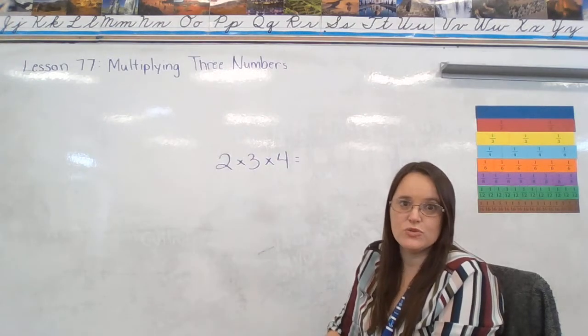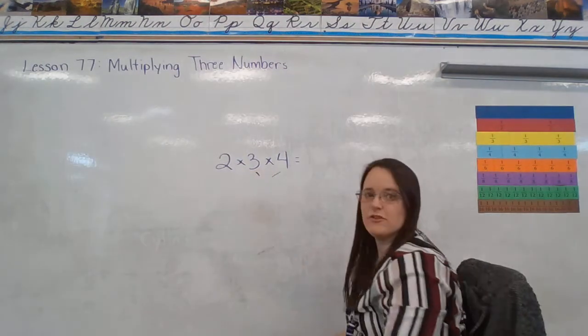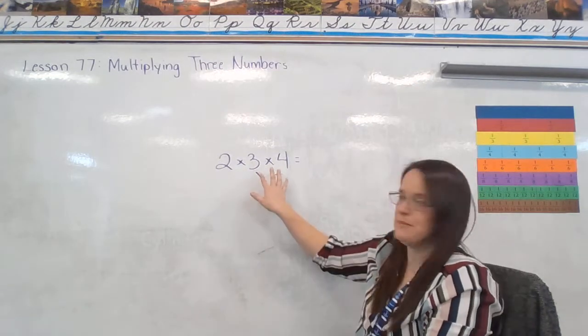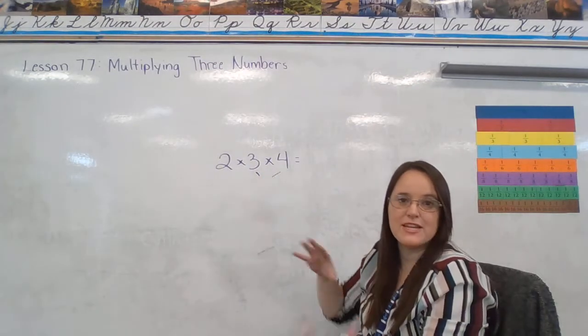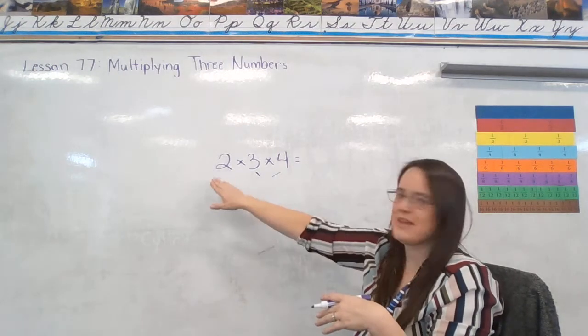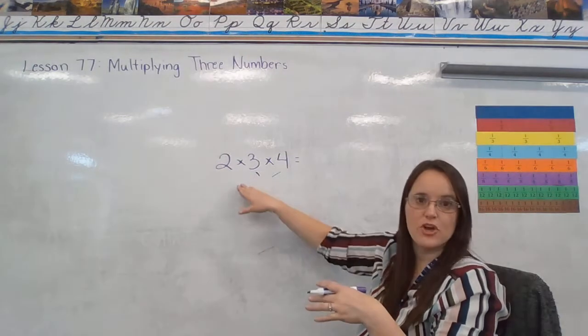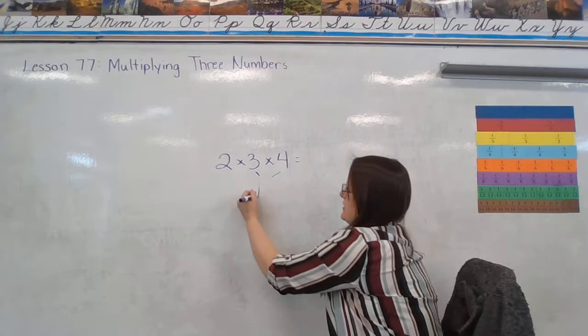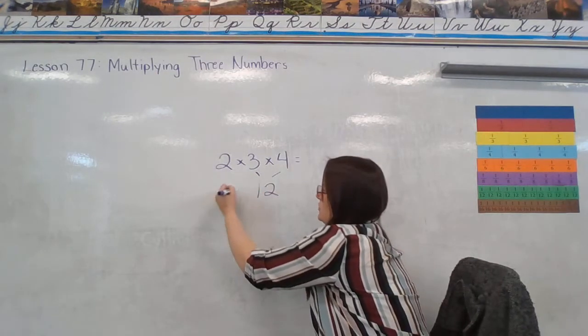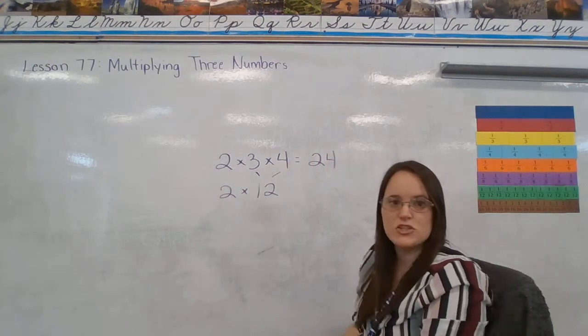I know how to do 2 times anything in my head. So I'm going to multiply 3 times 4 first and then I'll double it last. Because I know when I multiply two of my numbers, I'm going to end up with a much bigger number that I then have to deal with. I want to make that second multiplication problem as easy as possible. So 3 times 4 is going to give me 12 and now I'm going to do 2 times 12 which gives me 24.